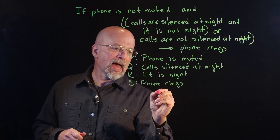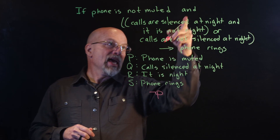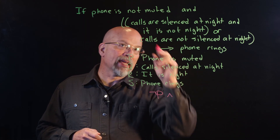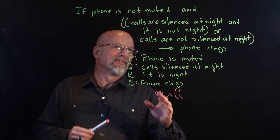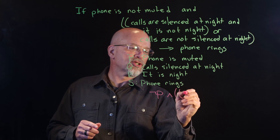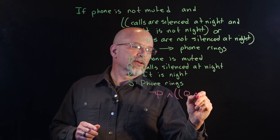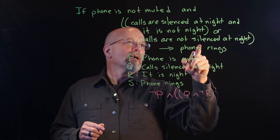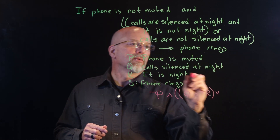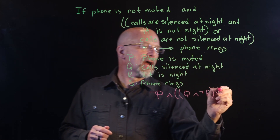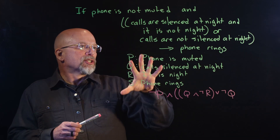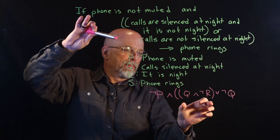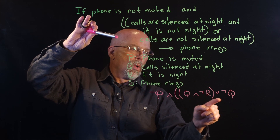Phone is not muted — that is ¬P. We substitute the caret for the AND symbol. Inside of these parentheses — which are not grammatically correct — I've got: calls are silenced at night, which is just Q. And there's another caret, and not night. It is night, so not night is ¬R. And then we have this OR — the little V — calls are not silenced at night, so that would be ¬Q. This requirement turns out to be: ¬P ∧ (Q ∧ ¬R ∨ ¬Q).